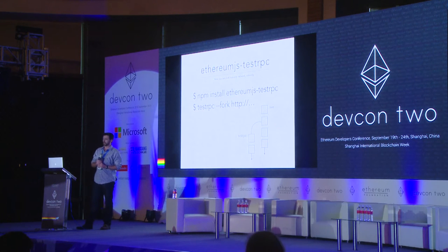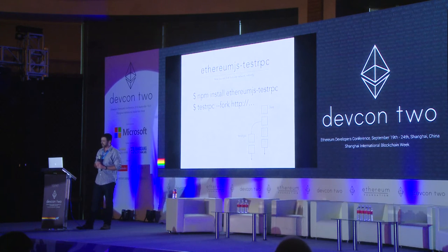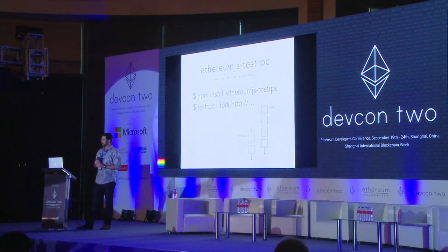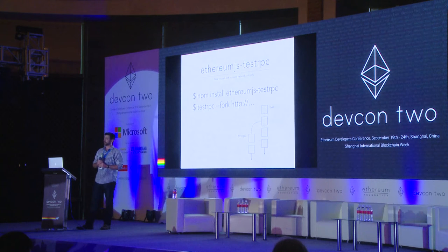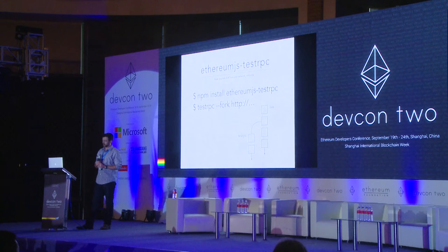And this is the fork feature. It's a big feature in a little package. If you install the TestRPC and then use the dash-dash fork option, what this allows you to do is create a new Ethereum client and fork from any available chain. This means that if you're running Go Ethereum, you can fork and run a new development chain using all the data that exists on the live chain. You can use Parity, you can use CPP Ethereum — you can fork from anyone you like.